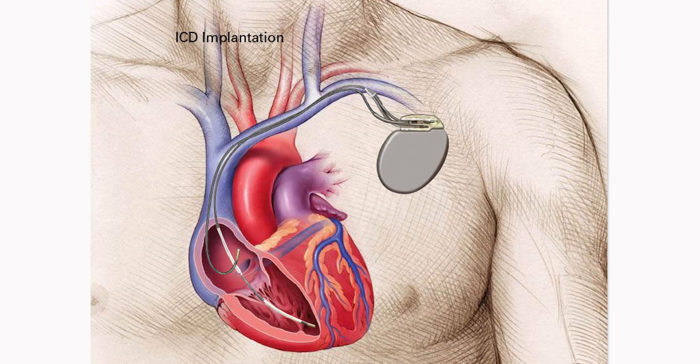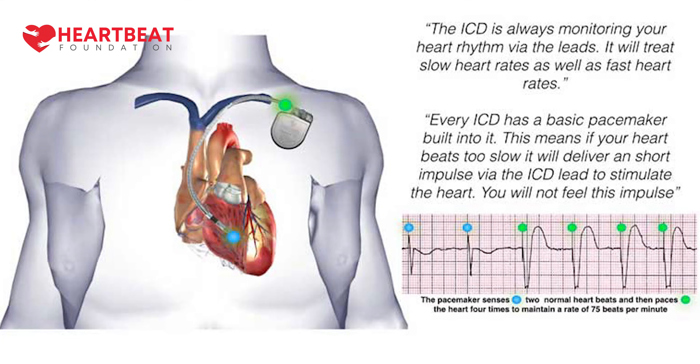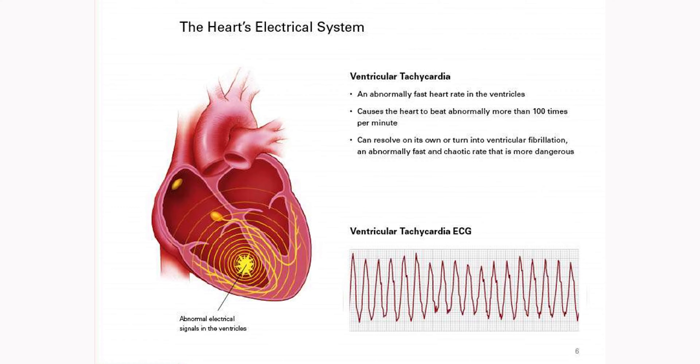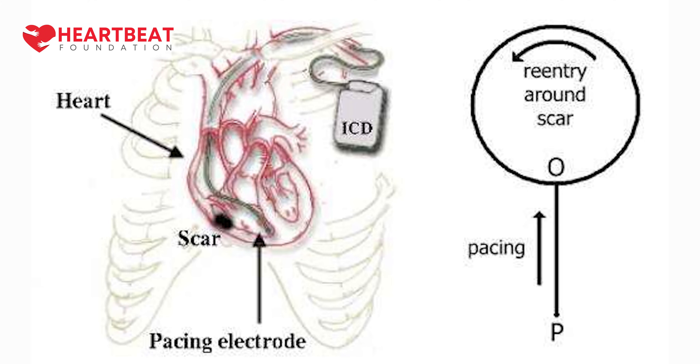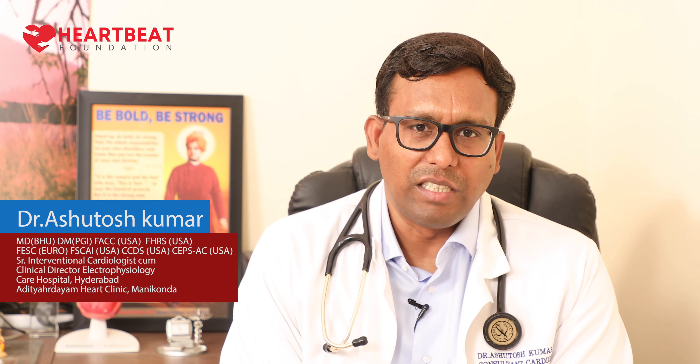The implantation procedure is almost the same for pacemakers and ICDs, with two leads being implanted. However, the lead characteristics in ICD patients are different — the leads are not only pacing, meaning giving current to increase heart rate, but they also have the capacity to sense and check beat-to-beat. Wherever a heart rhythm problem, called ventricular tachycardia or ventricular fibrillation, is detected, they immediately start delivering electrical therapy in a computerized way, chasing the abnormal beat. This is called anti-tachycardia pacing, or ATP.